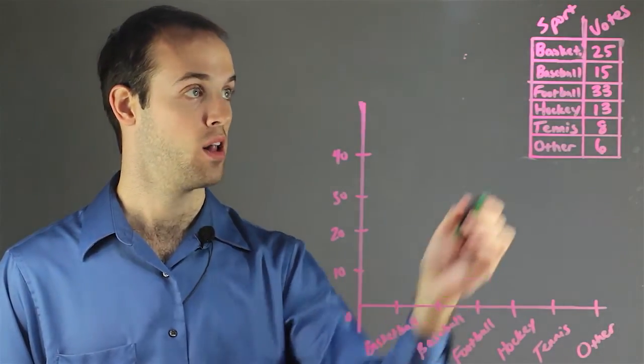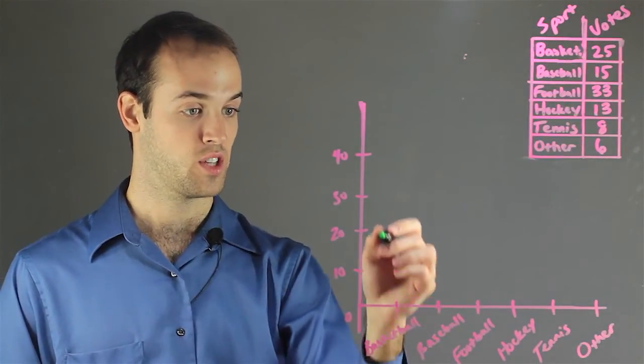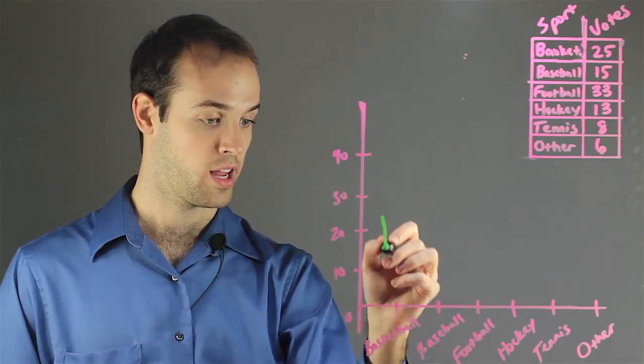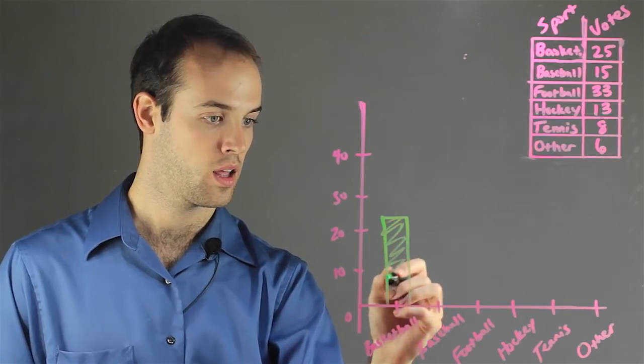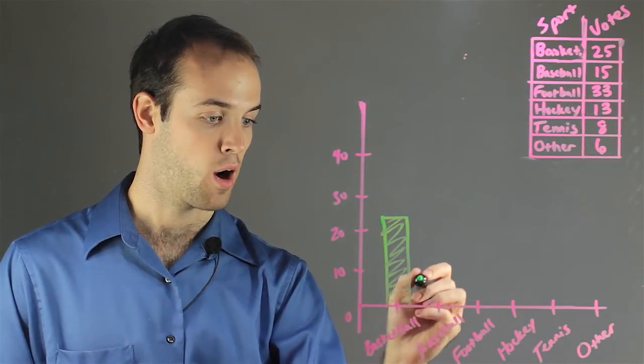So, first up, we have basketball, and it got 25 votes, so I want to just draw a bar up right here between 20 and 30, and that is going to be the bar for basketball.